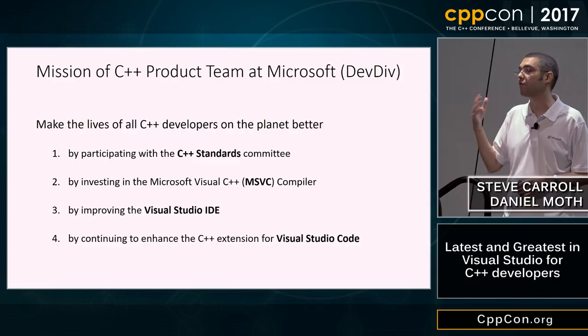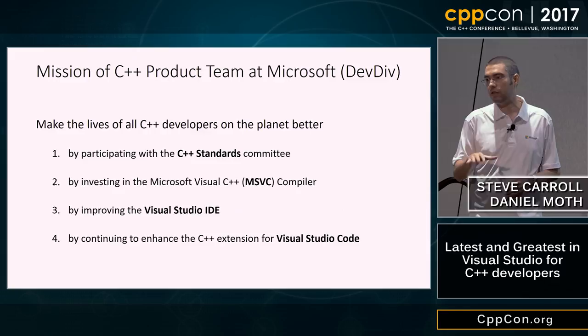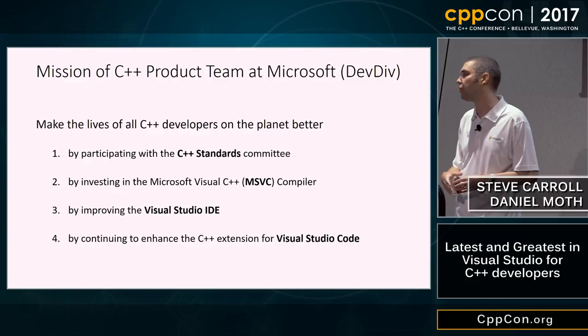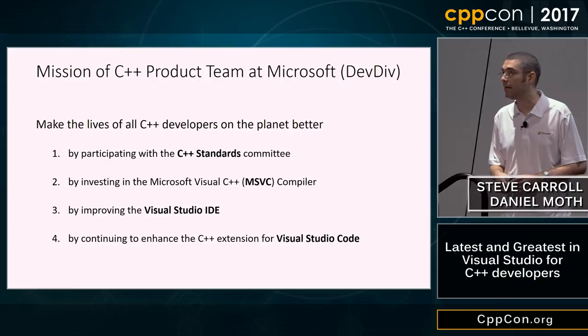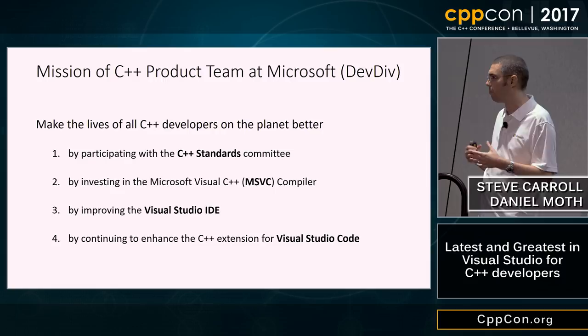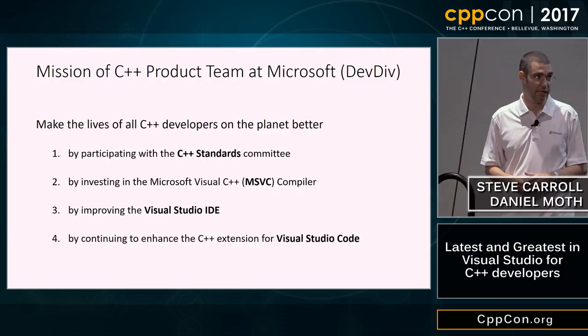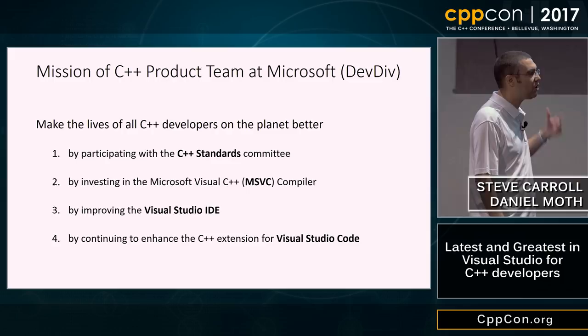We're not going to talk about the C++ standards work in this session. We send around eight people to each of the three meetings per year, where we review proposals, participate in proposals, lead proposals ourselves, and validate early versions with our compiler. Instead, we'll focus on the middle two areas — the MSVC compiler and the Visual Studio IDE.